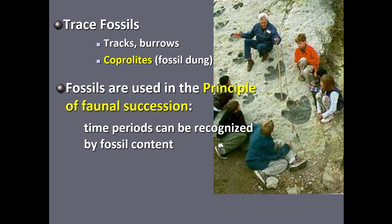That's the principle of faunal succession: figuring out the age of a rock layer based on its fossil content. This is the end of our discussion of relative time. After the activity on unconformities, there will be another lecture on absolute time — when you can determine the actual age of a rock layer, such as it was formed 105 million years ago. That involves isotopes, something we discussed several weeks ago in chapter three. Stay tuned.